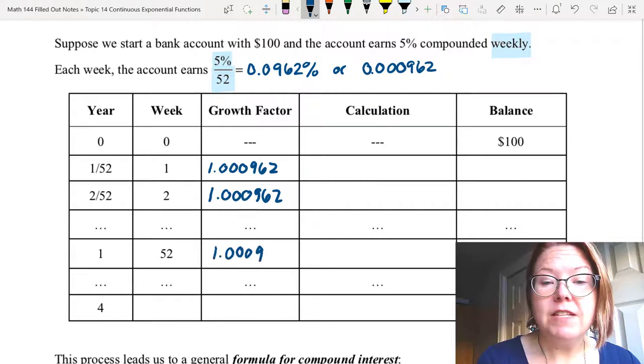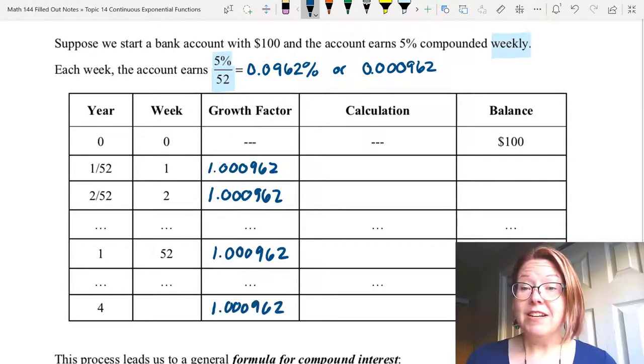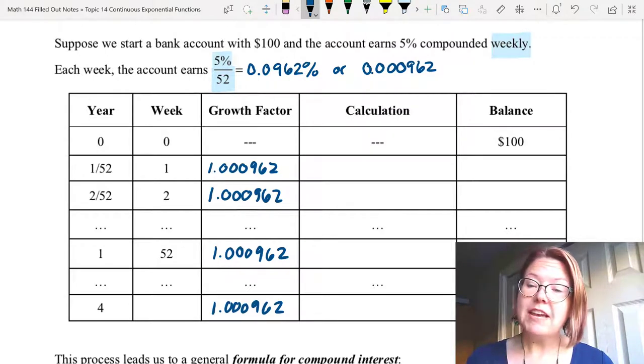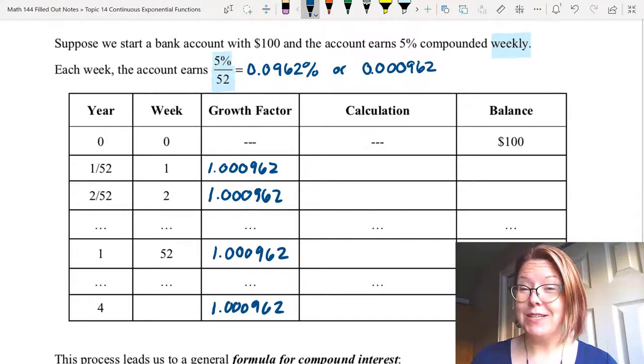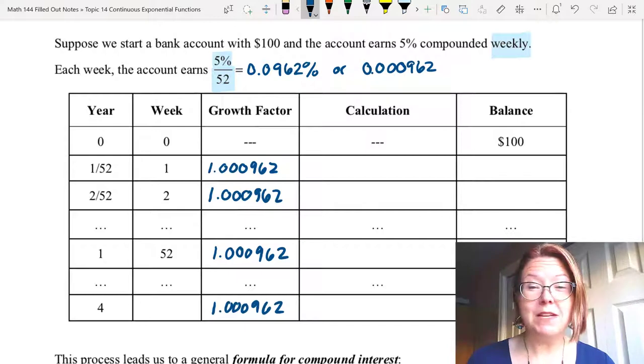And we're going to use that for the entire problem. We have an initial balance of 100. Let's calculate the new balance after one week. And in this case, I'm going to take my balance out to the nearest tenth of a cent, or three decimal places, because the growth of interest is so slow when we compound by weeks.